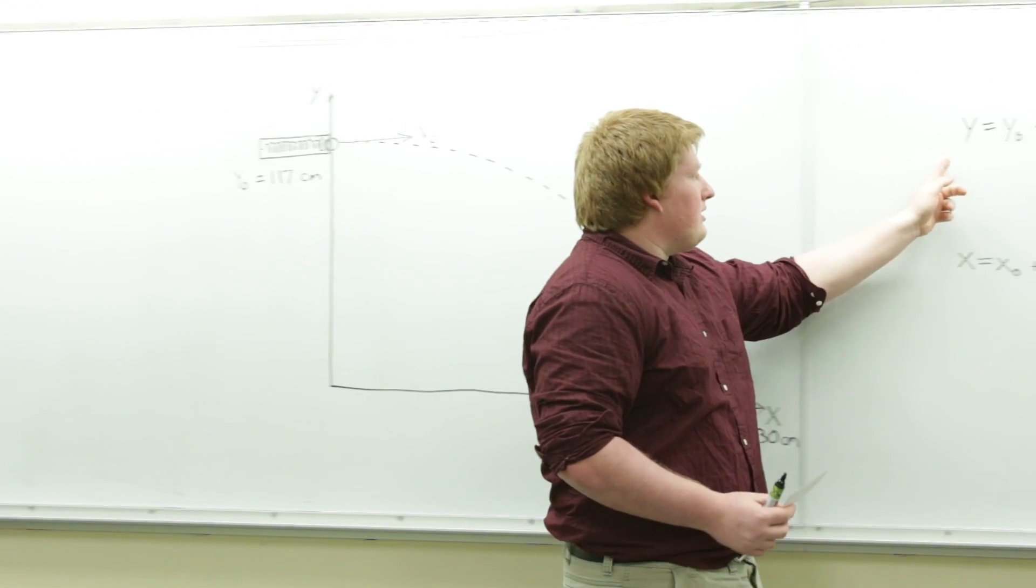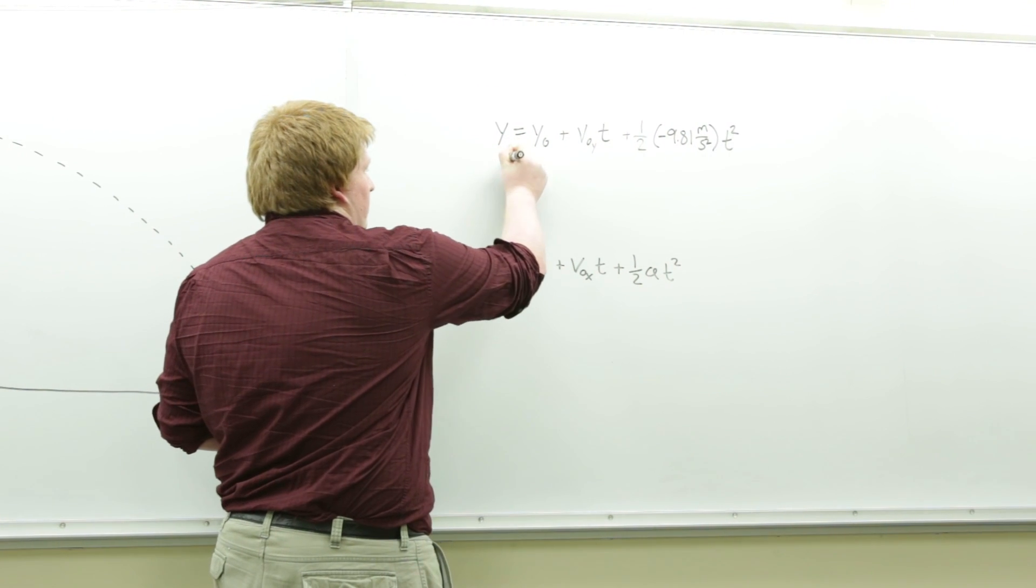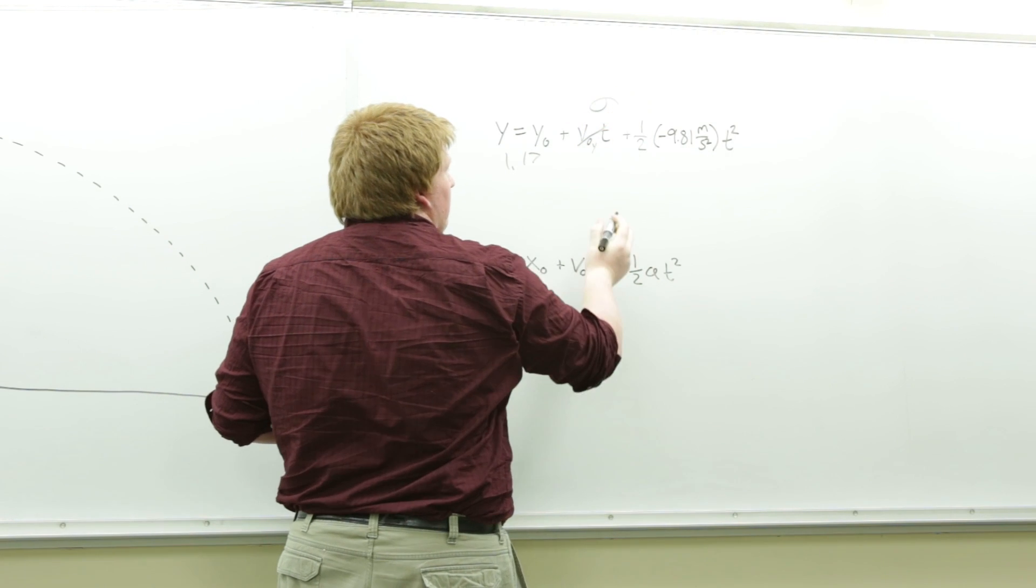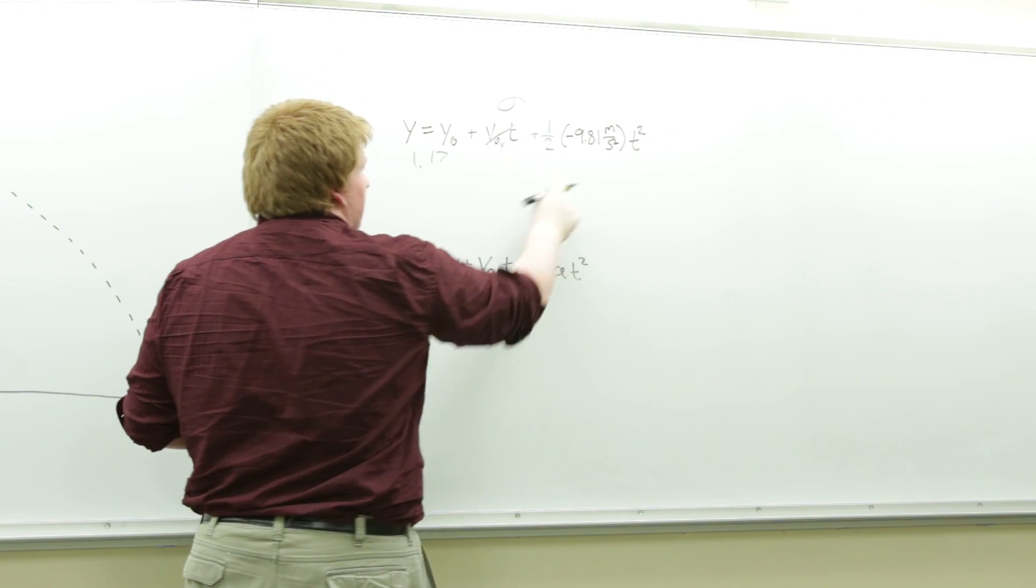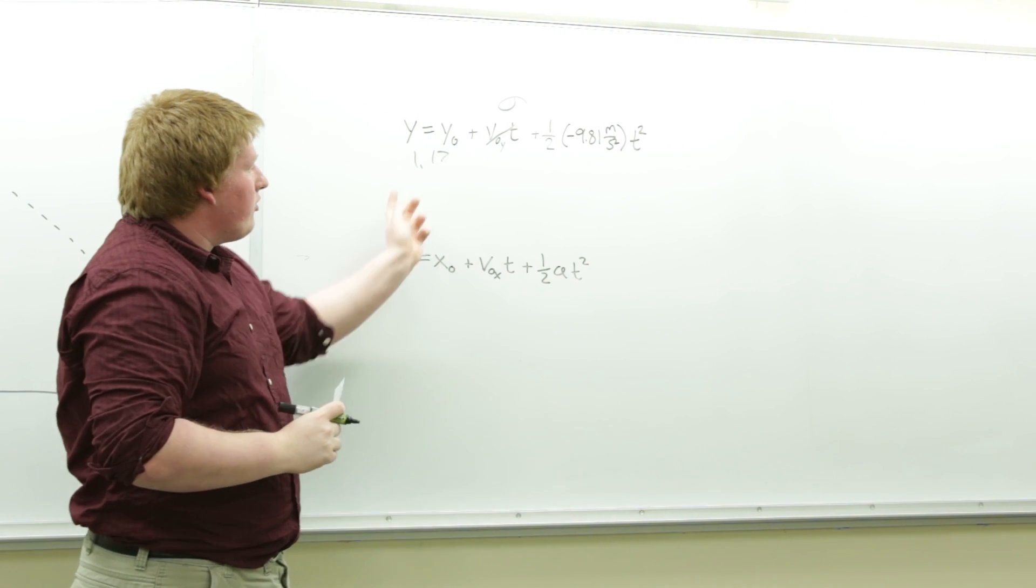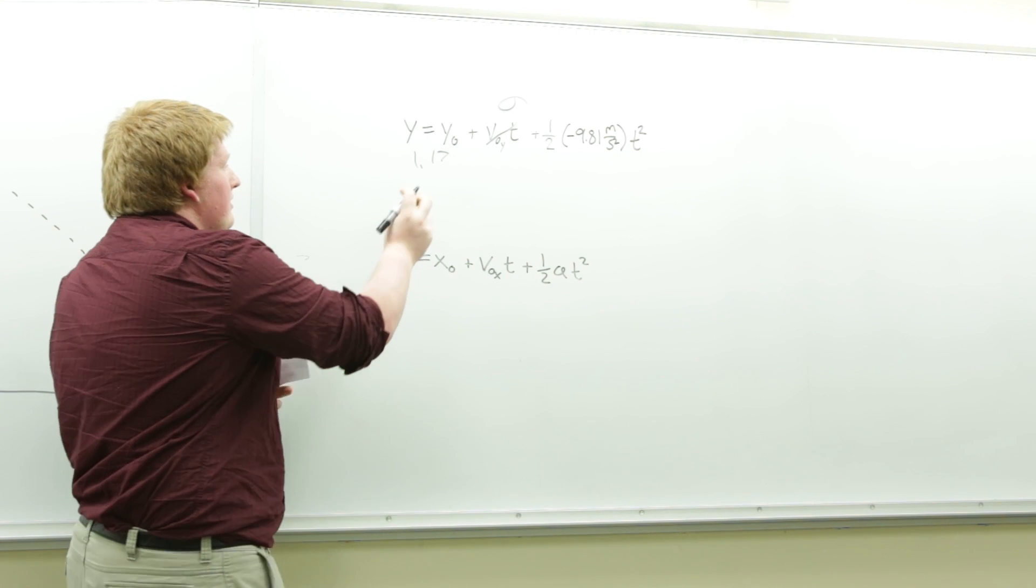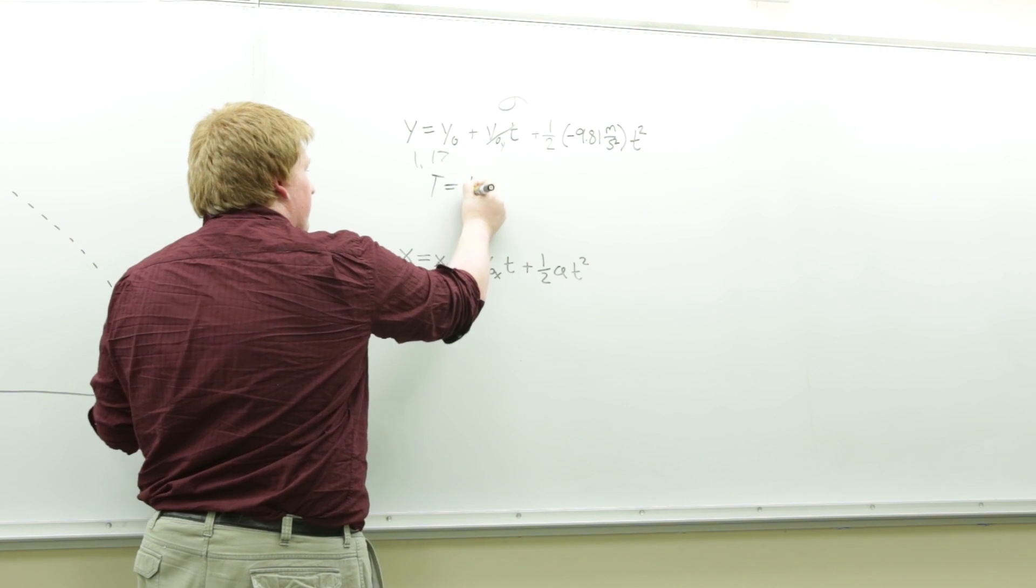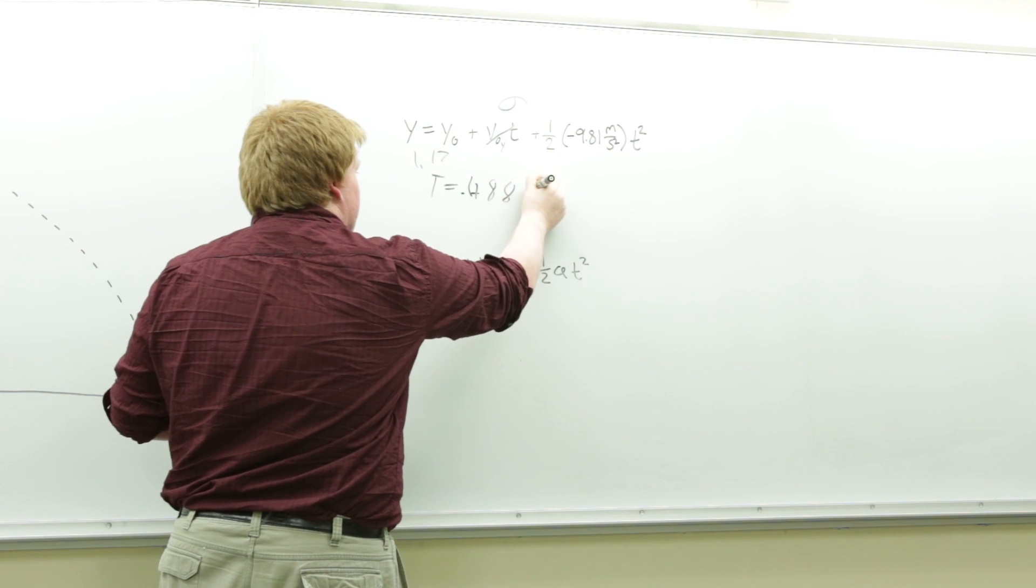If we plug in the correct values, R-naught equals 1.17 and this equals 0. And we can find the time it takes to get all the way across the lap. And so with that, we get T equals 0.488 seconds.